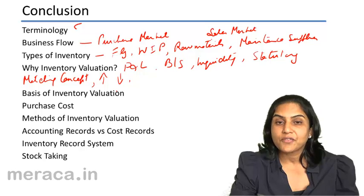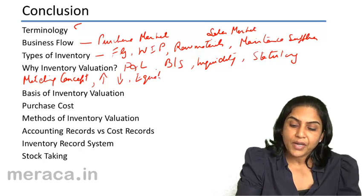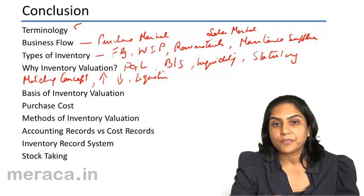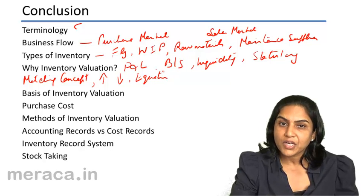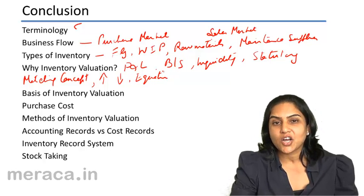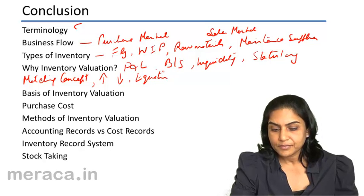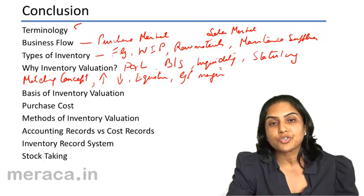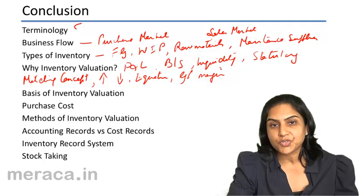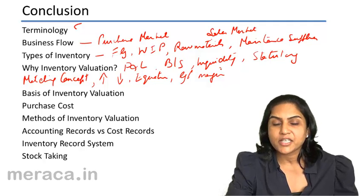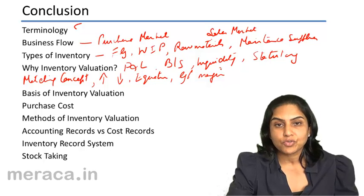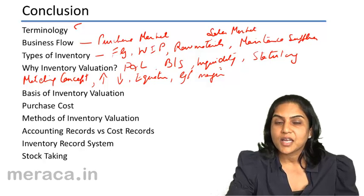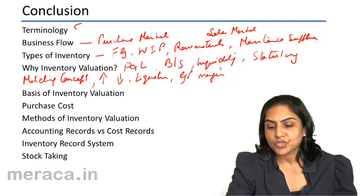We also converted the trading account into an equation — a very important equation being that cost of goods sold equals opening stock, plus purchases, plus direct cost, minus closing stock. We also understood the gross profit margin, which is usually expressed as a percentage of sales but could also be expressed as a percentage of cost of goods sold. Gross profit is equal to sales minus cost of goods sold.